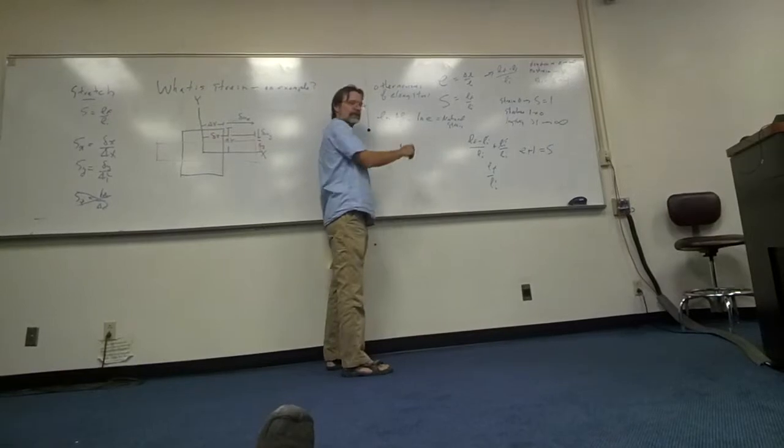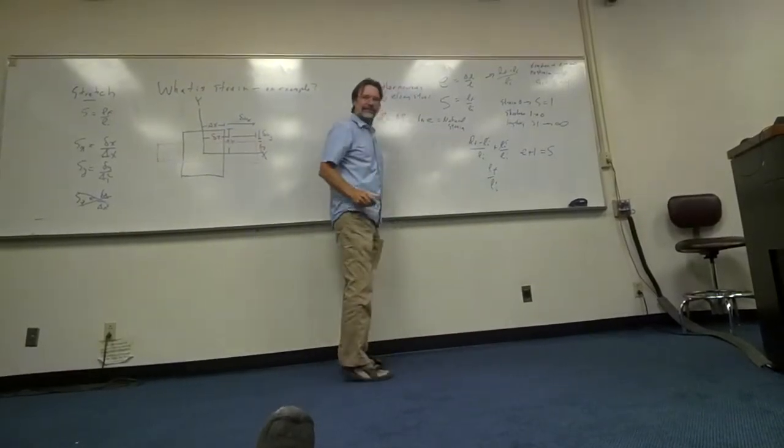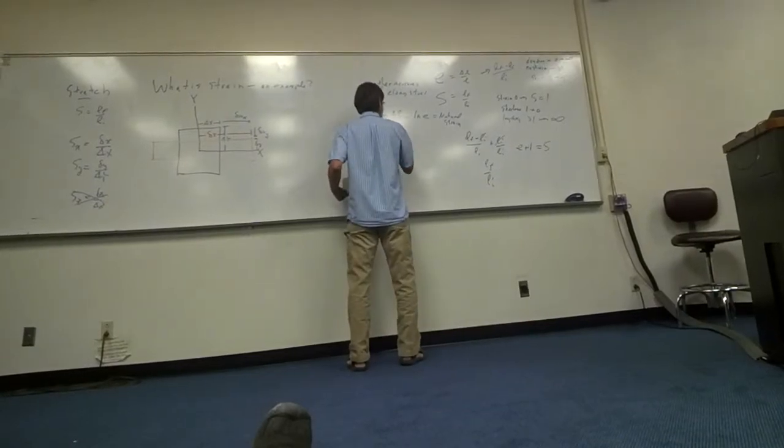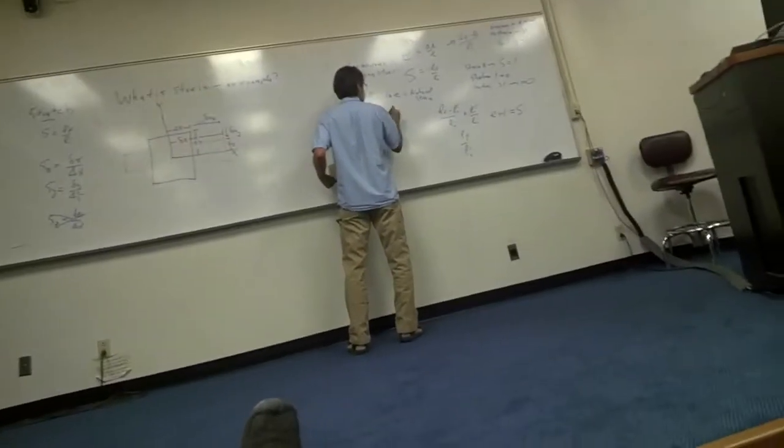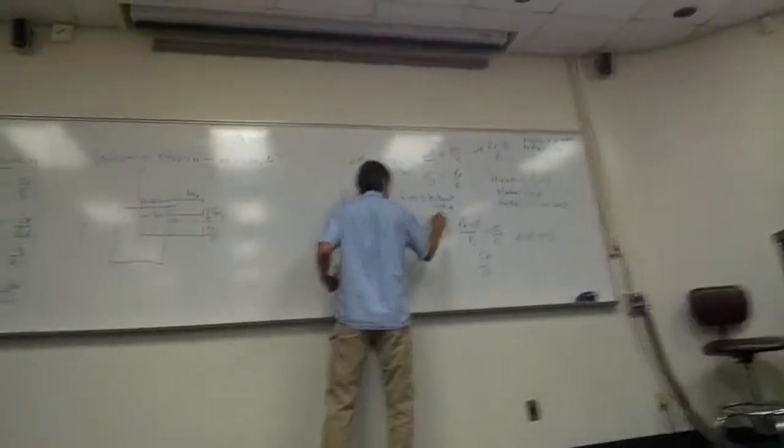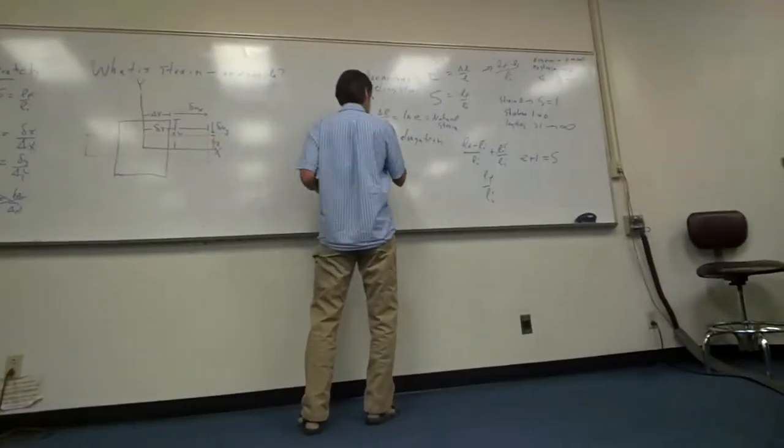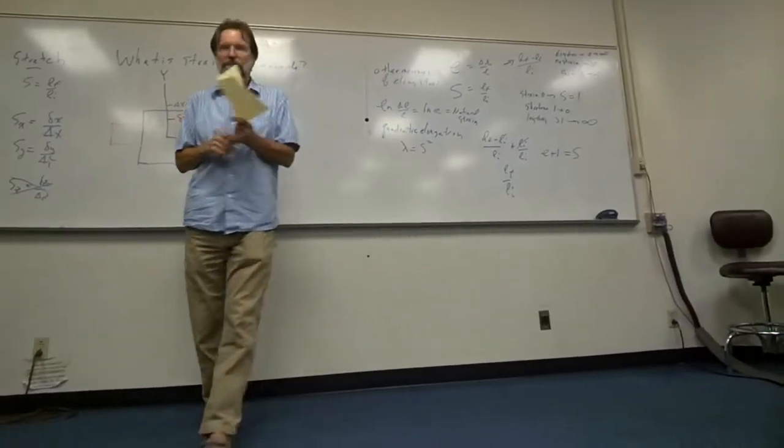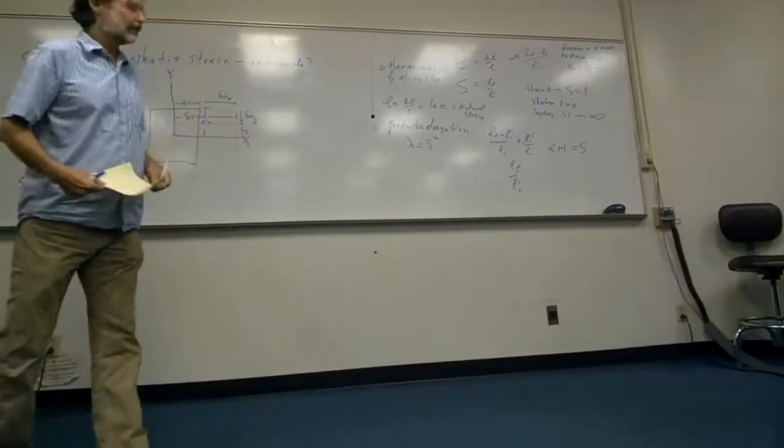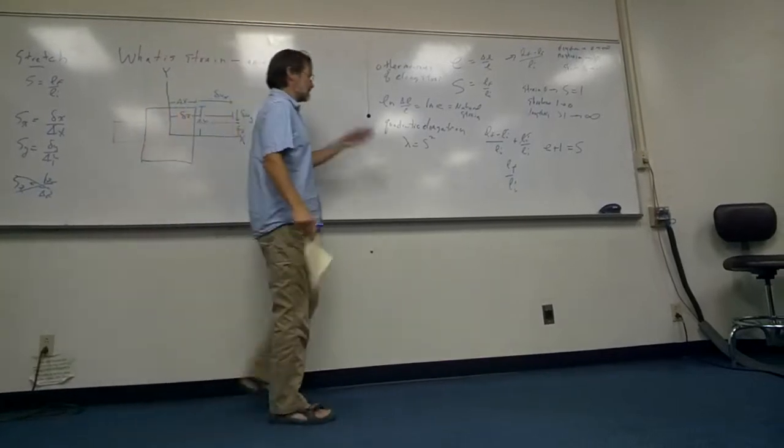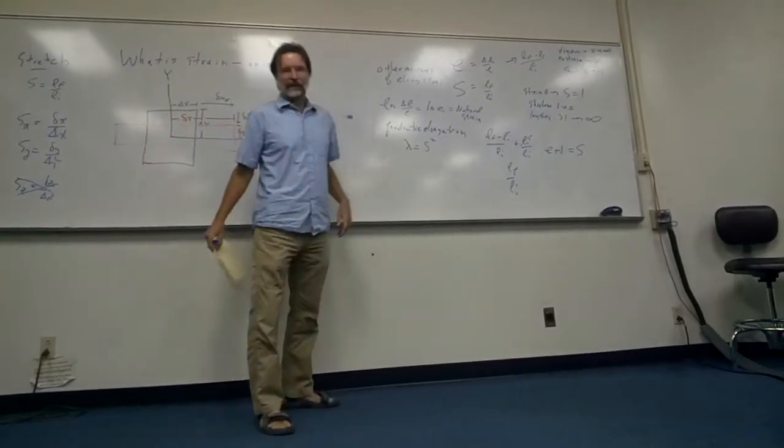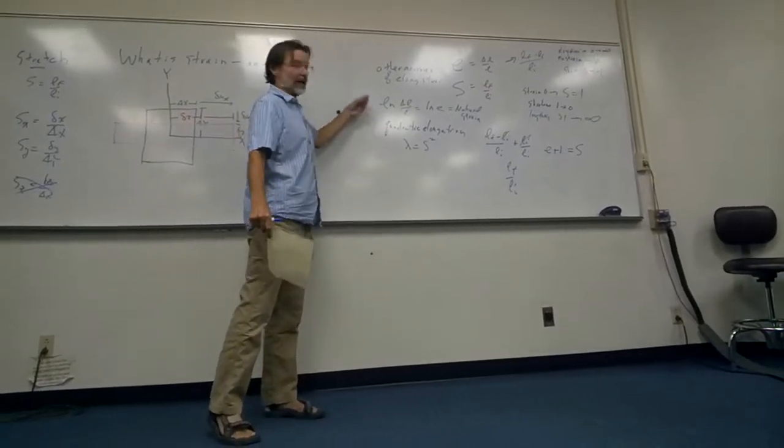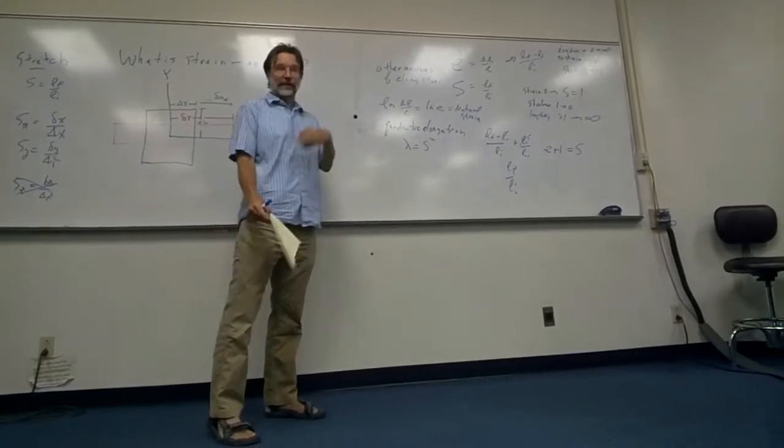And it's sometimes easier to represent it because it's natural strain. And the other quantity that's sometimes used is called quadratic elongation. And quadratic elongation, lambda, is S squared, or the stretch squared. And sometimes people report things in quadratic elongation. This falls out of several theoretical analyses, so people use quadratic elongation instead of stretch.